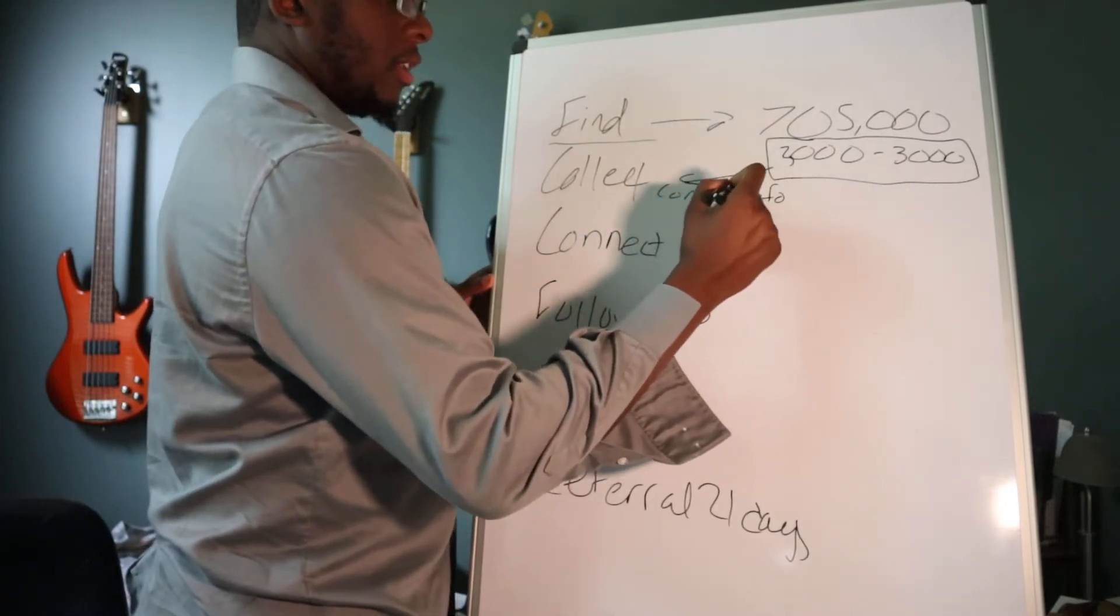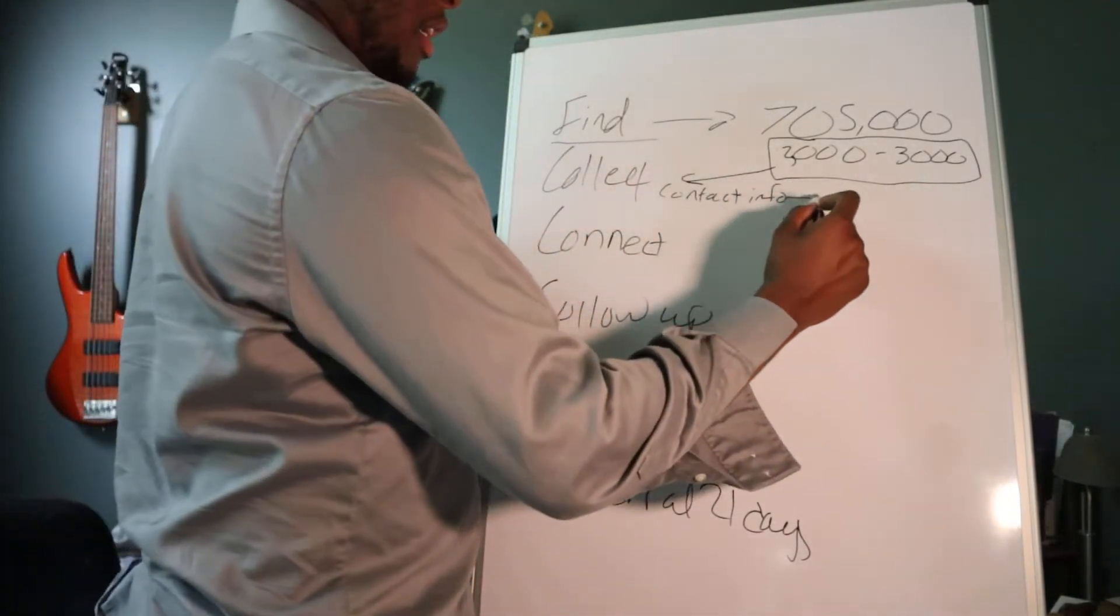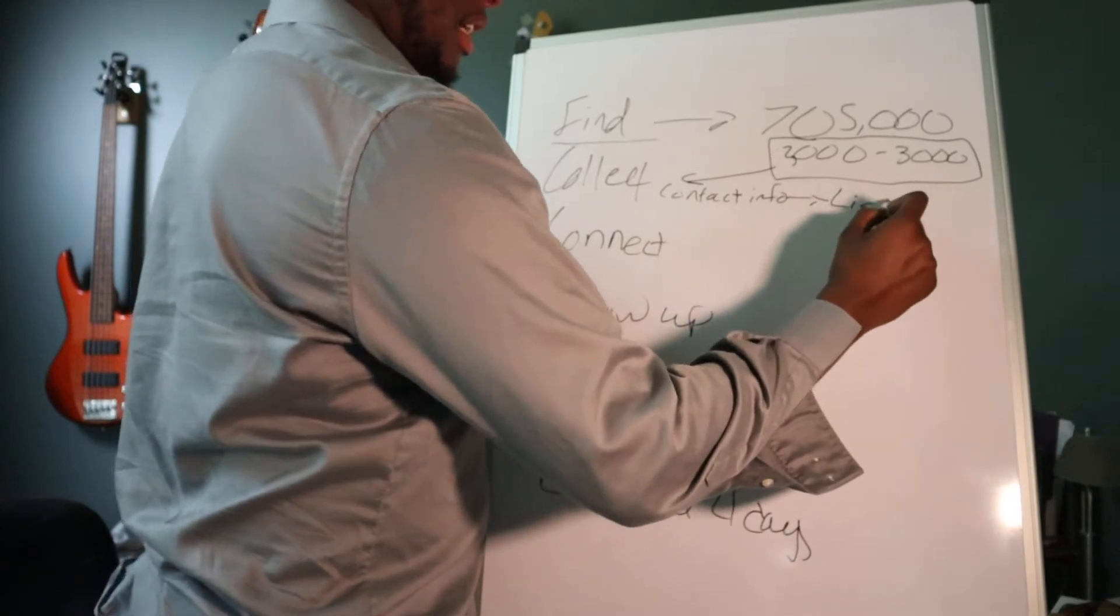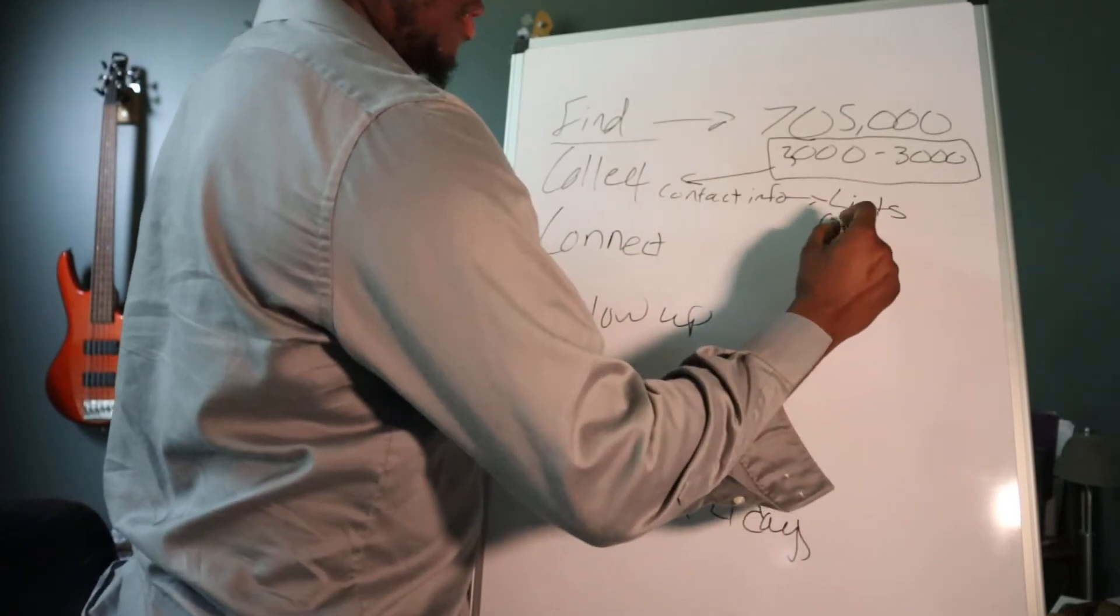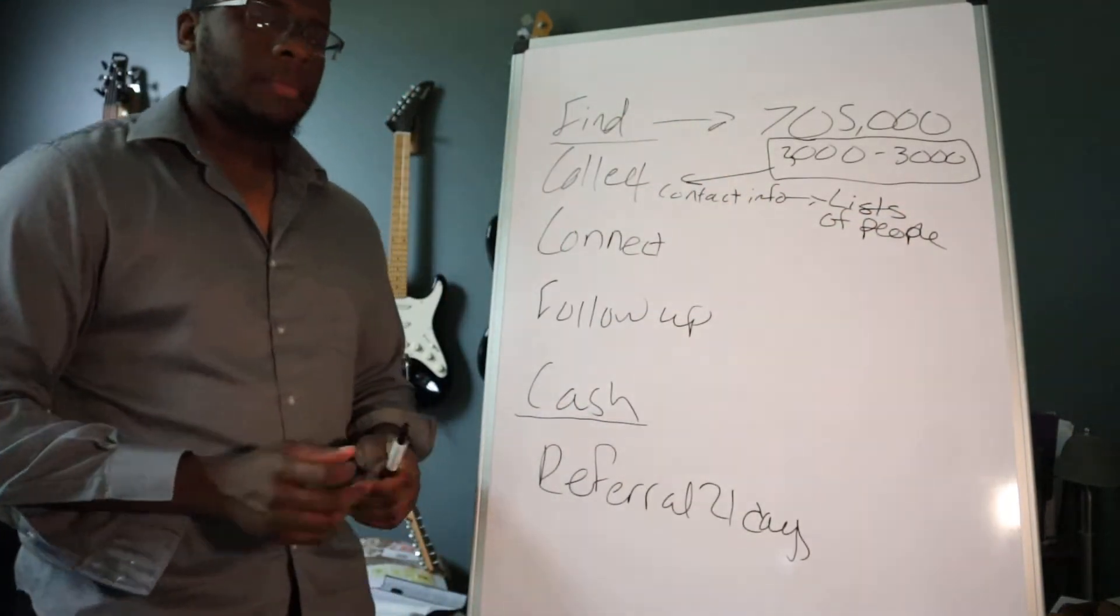That's their LinkedIn profile, their phone number, their email. You gotta get a list. Everything with marketing is all about lists—lists of people.